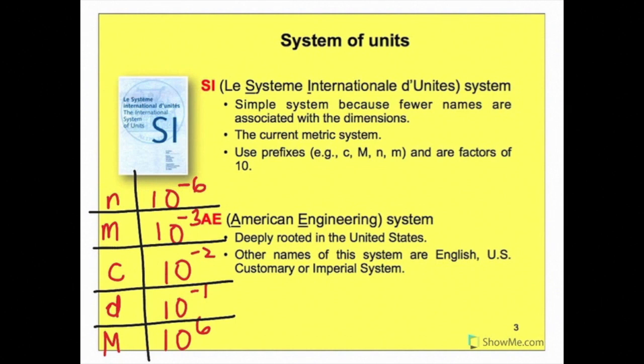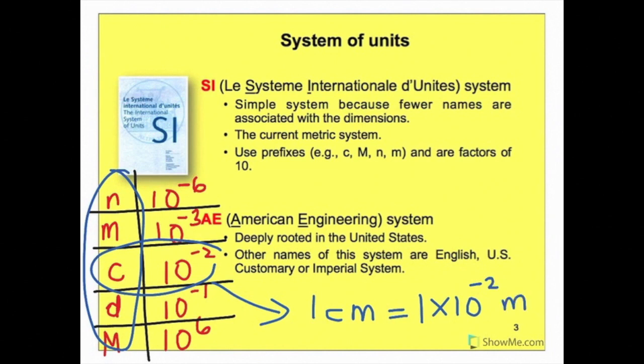I've drawn a sample table of some prefixes commonly used. On the left-hand side is the prefix and the right-hand side is the factors. So to use this, if it's 1 cm, it is equal to 1 times 10 to the power of negative 2 meters. And if it's 1 decimeter, then it is 1 times 10 to the power of negative 1 meters.